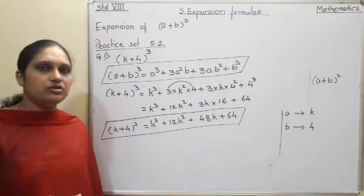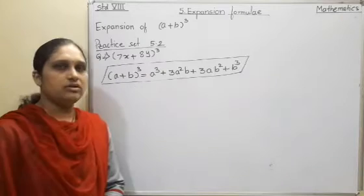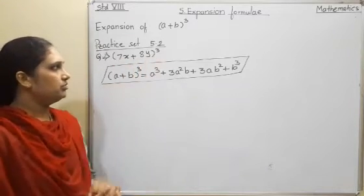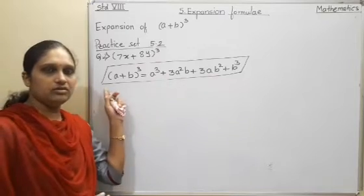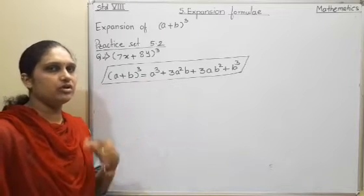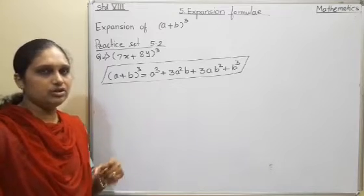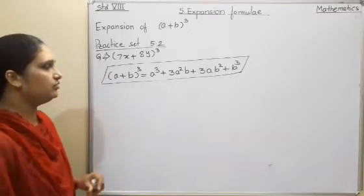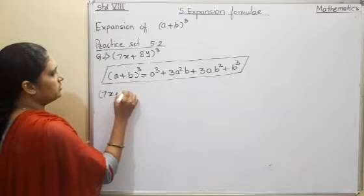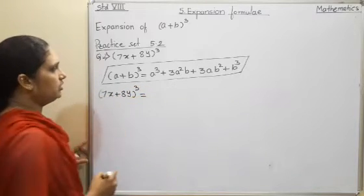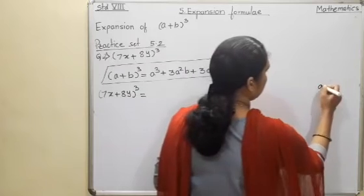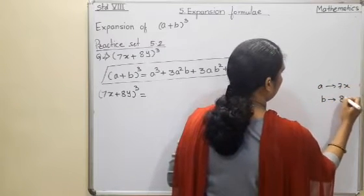This is how you have to solve the sum. Now the second sum is (7x + 8y) cube. For each and every sum you have to write the formula, and when writing the formula say it out loud — that way it will be fixed in your mind and you will not get confused. Comparing with the formula, a equals 7x and b equals 8y.